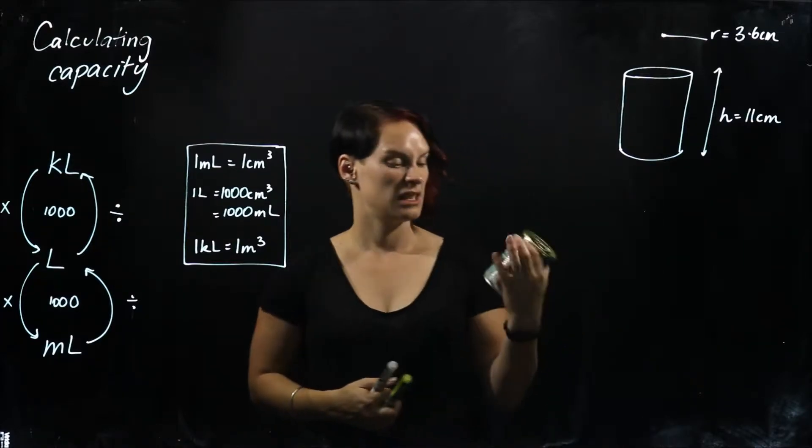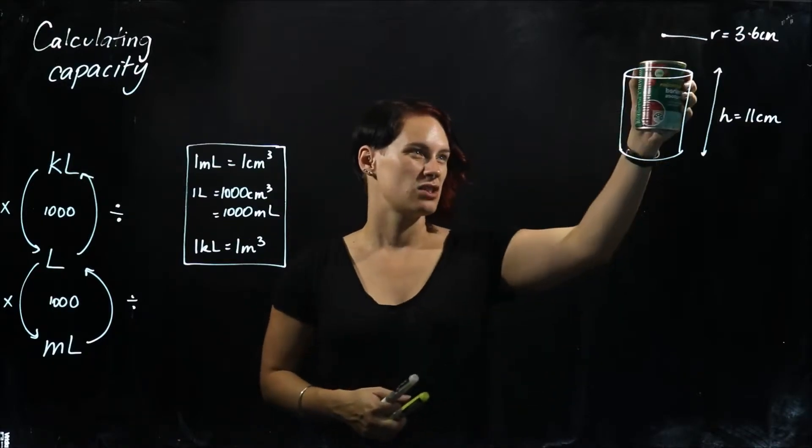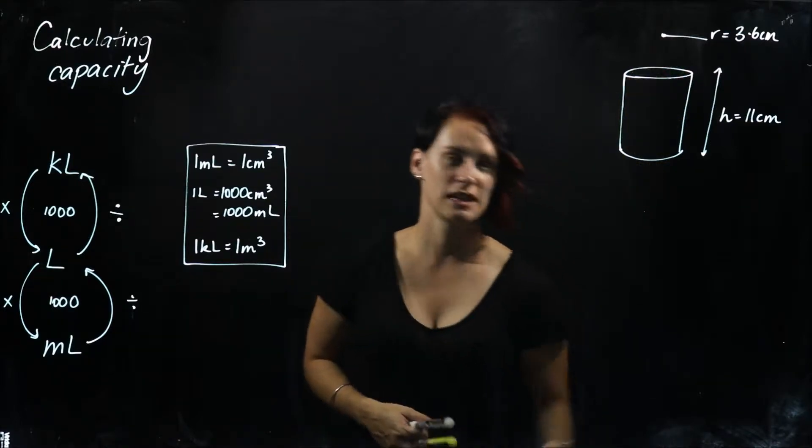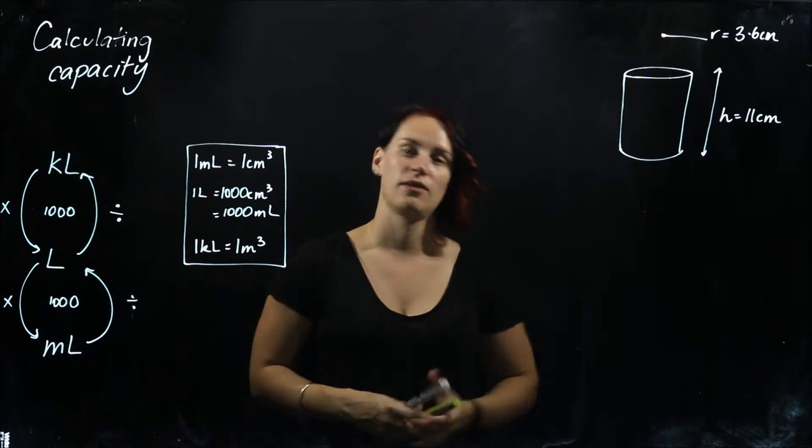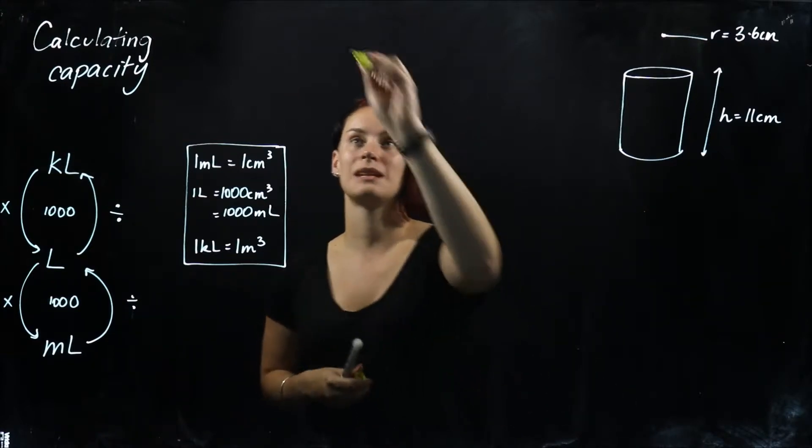Now I've got my tin of tomatoes this time, and I've measured it all up. What we're going to do first is find the volume so we can find the capacity, because we always have to do it in that order.